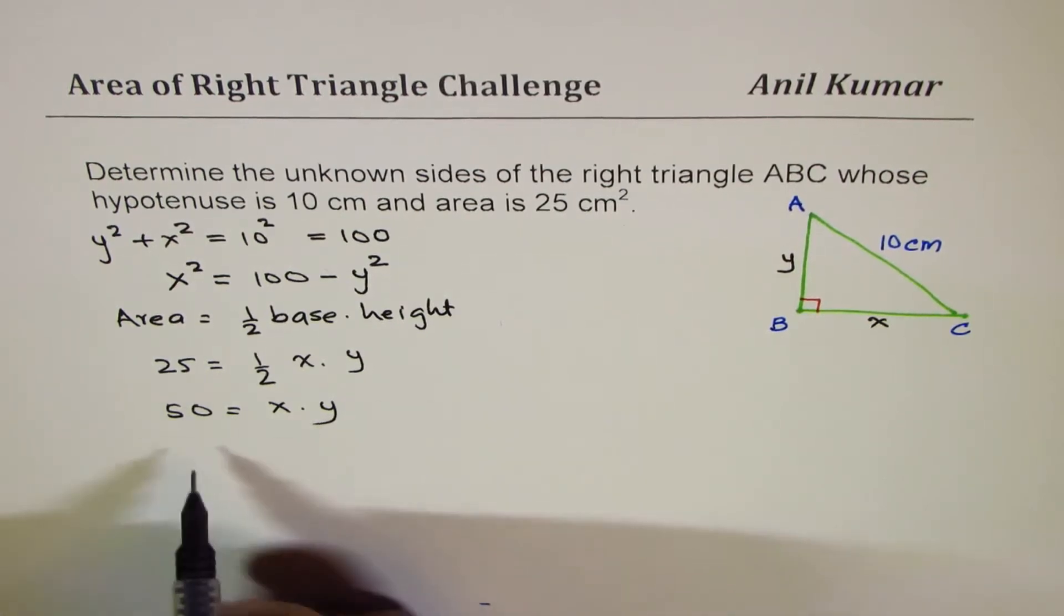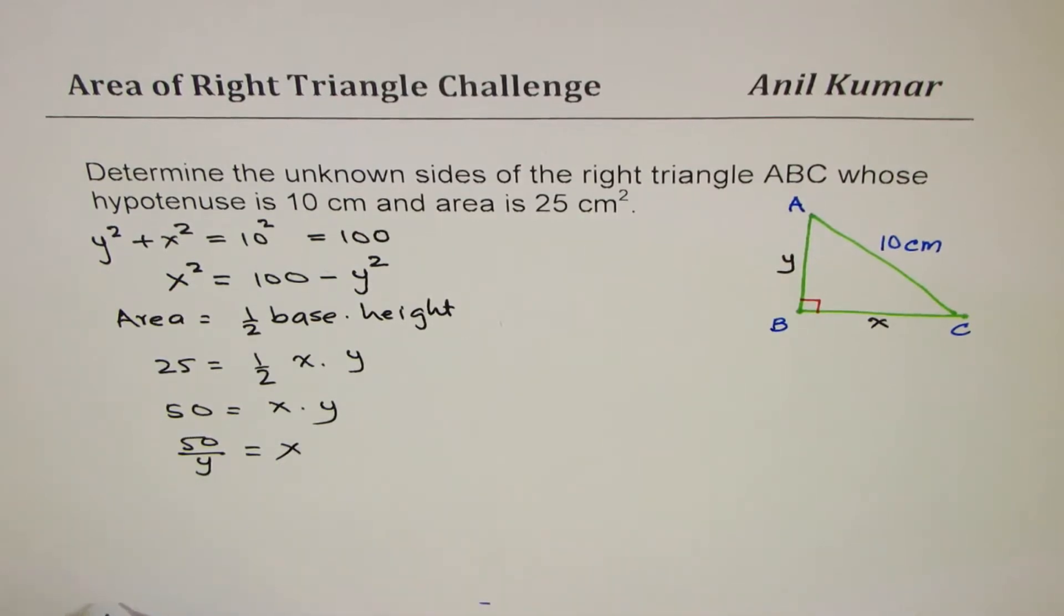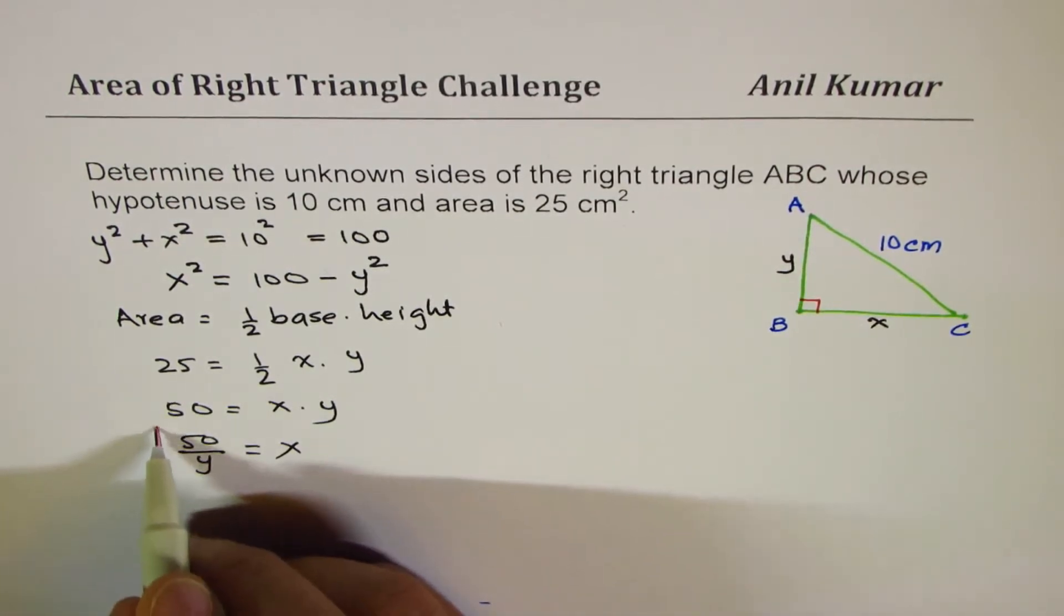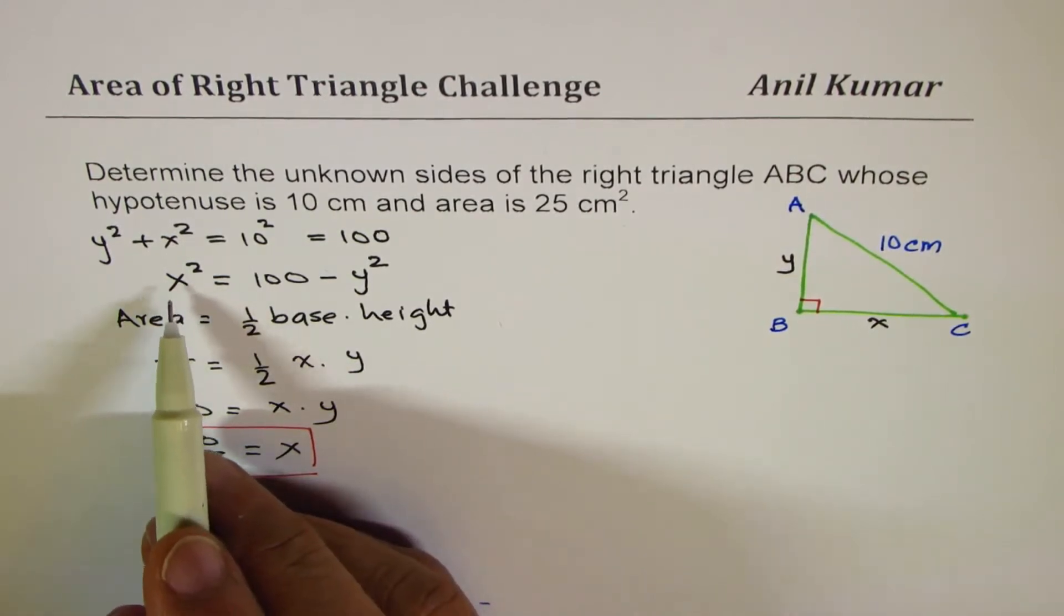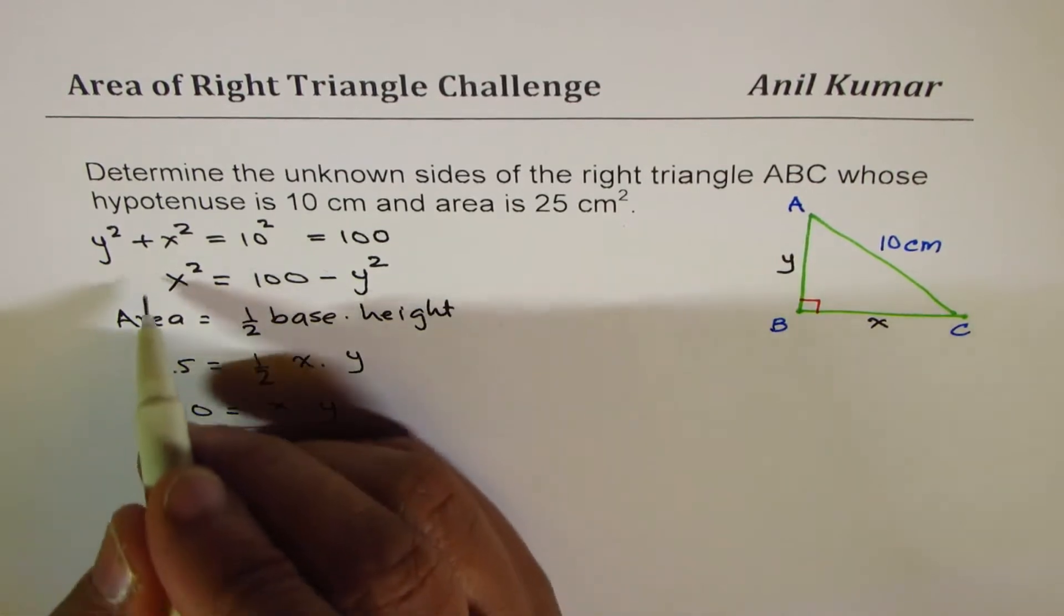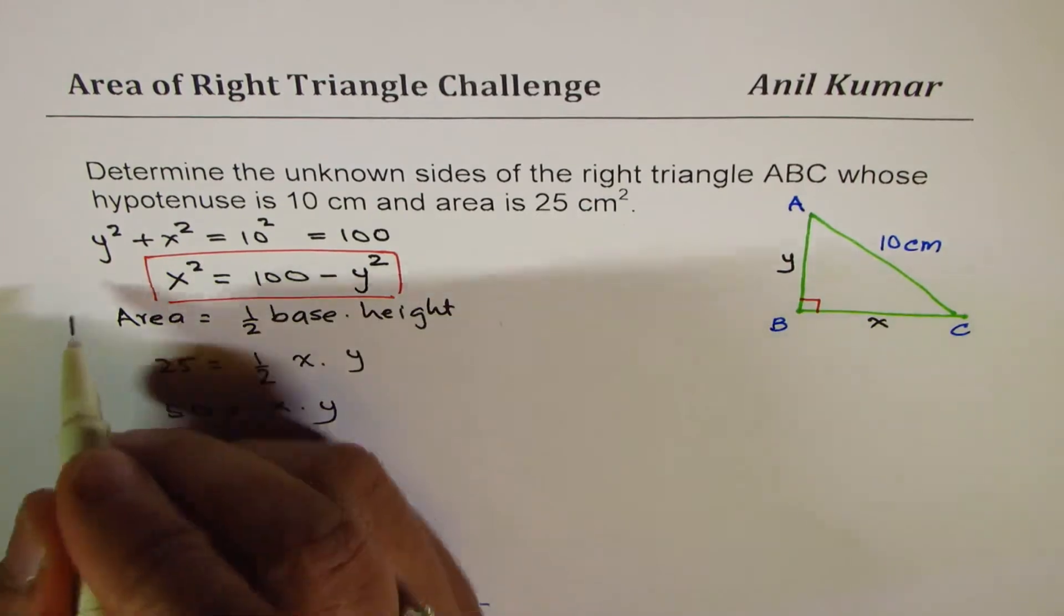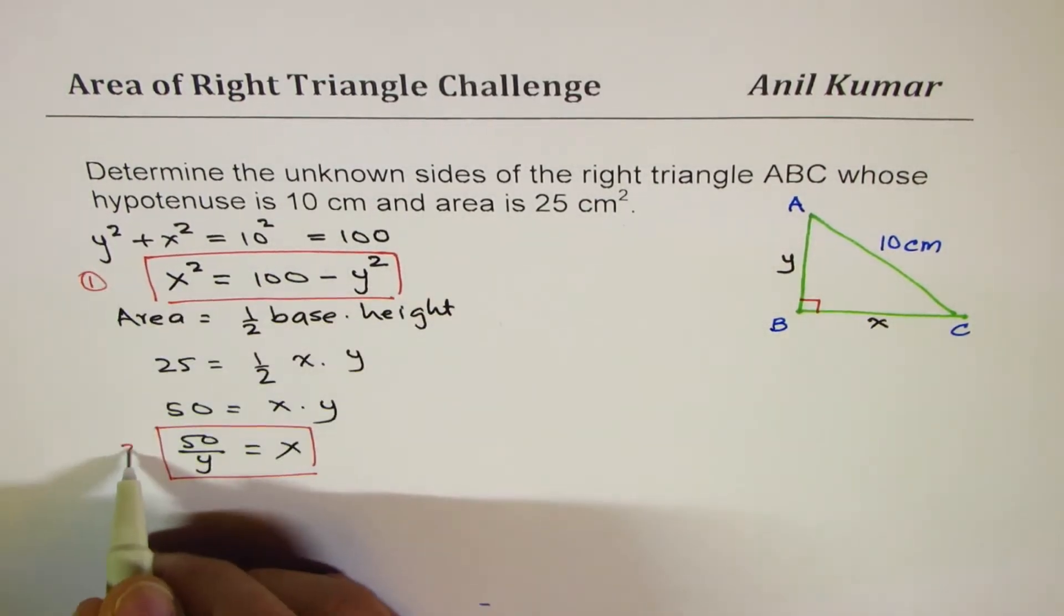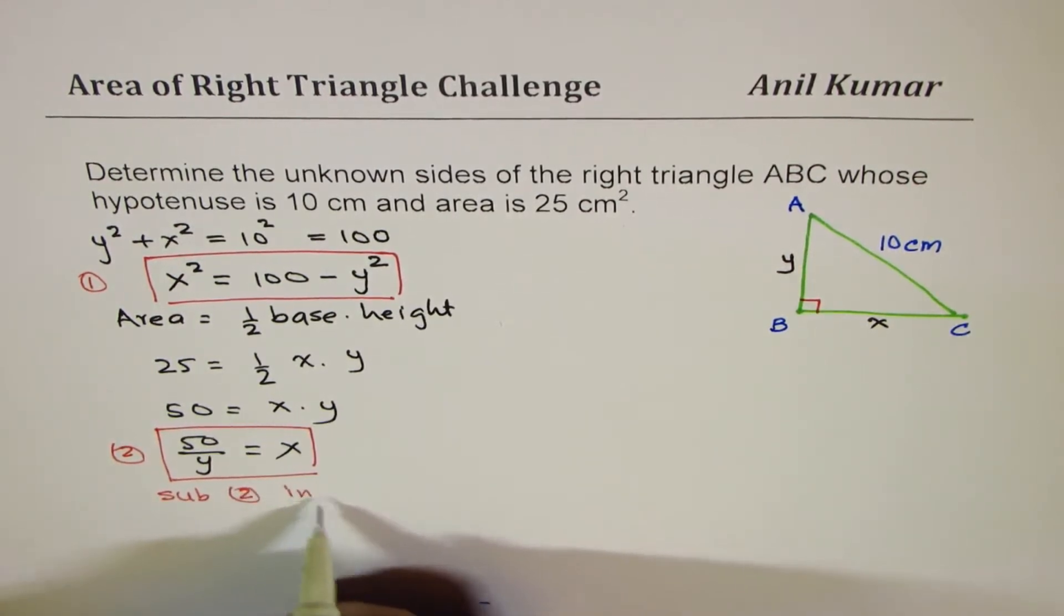From here, we can say 50 divided by Y is equals to X. So we have a relation which gives you X in terms of Y. We could substitute this value here and then we'll have only one variable. So these are the two equations we can work with. Let me call this as equation 1 and 2.